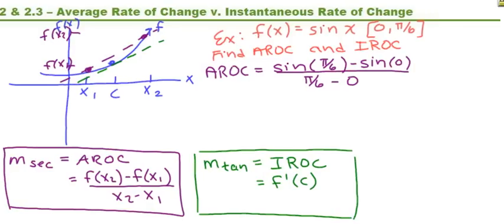Now working this out, the top sine of pi over 6 minus sine of 0, we get 1 half. And on the bottom, pi over 6 minus 0, that's pi over 6. So that's going to give us 3 over pi. And for comparison's sake, if we take that to 3 decimals, we get approximately 0.955. So there's our average rate of change.